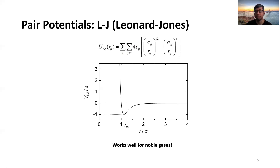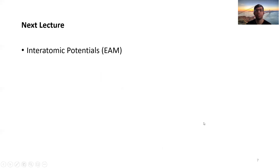In short, a pair potential is defined by the interaction of two atoms and is expressed in terms of attraction and repulsion between them. In this lecture we discussed an empirical pair potential. In the next lecture we will look into a hybrid or semi-empirical interacting potential — the Embedded Atom Method (EAM). See you there, thanks.